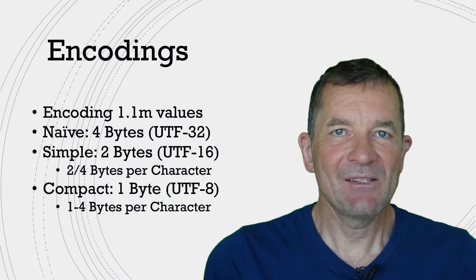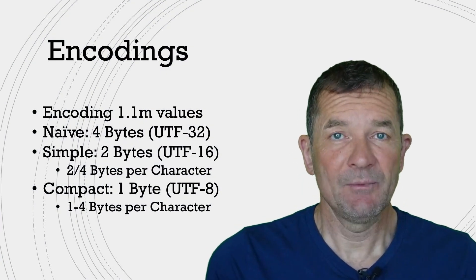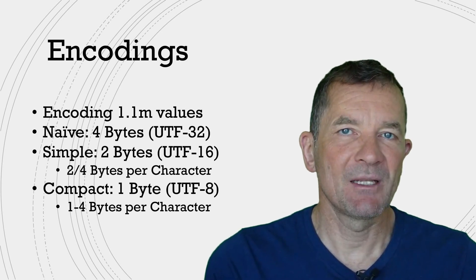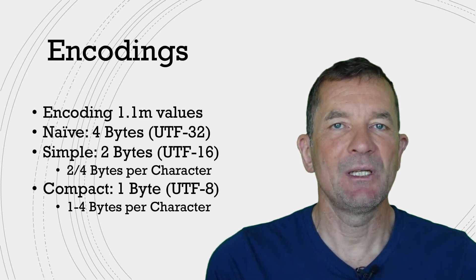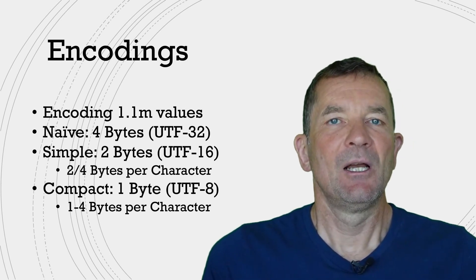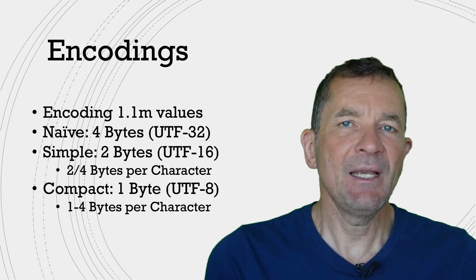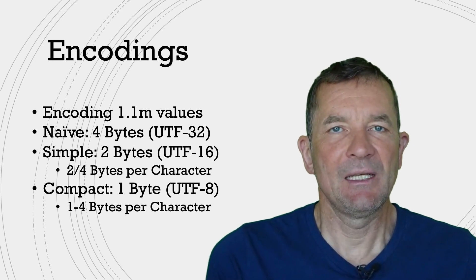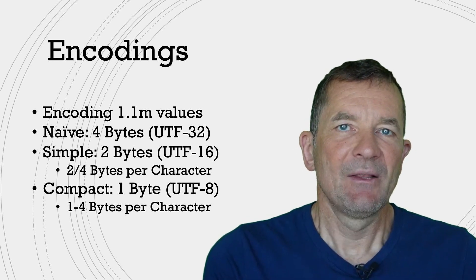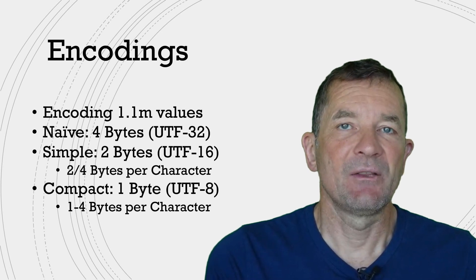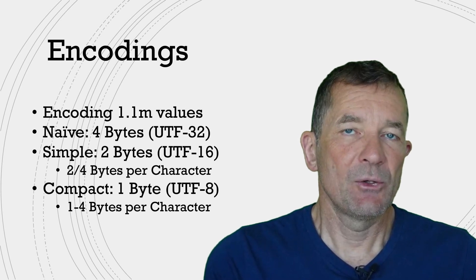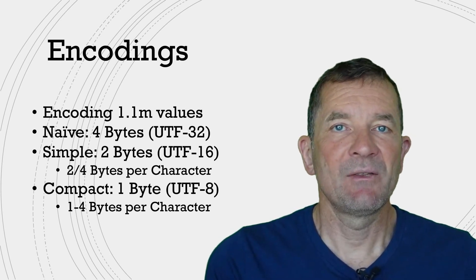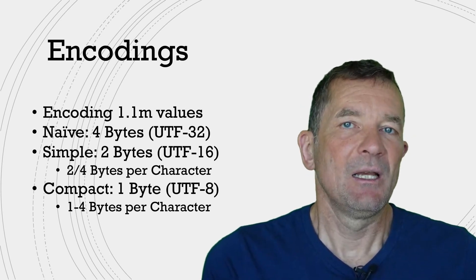Unicode has this big character repertoire of potentially 1.1 million characters, meaning that you definitely cannot encode Unicode in one character in a byte. And because Unicode is a little bit more complex, there are different encodings actually. There are very naive ones.